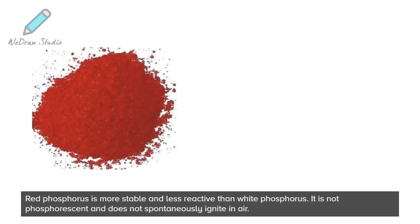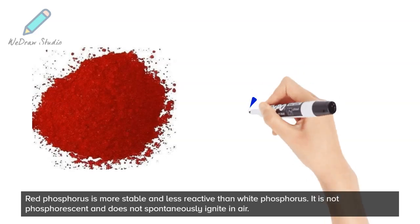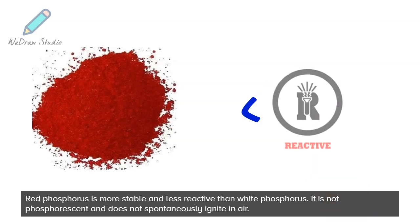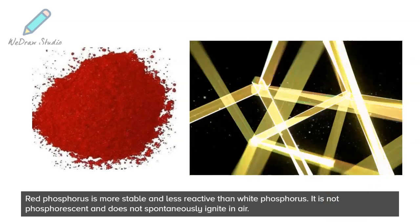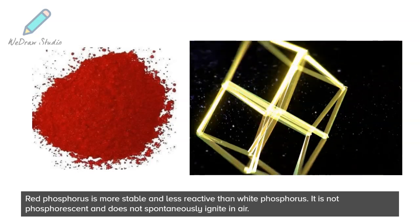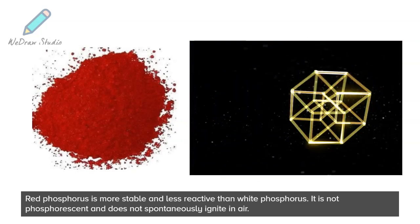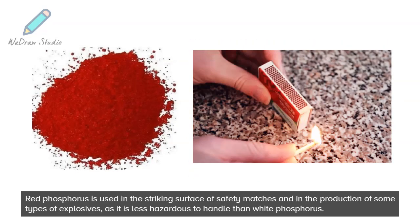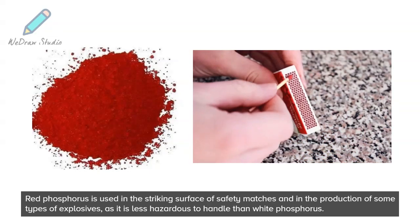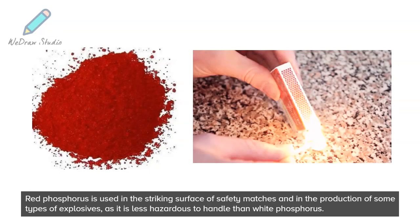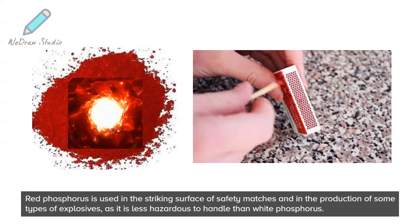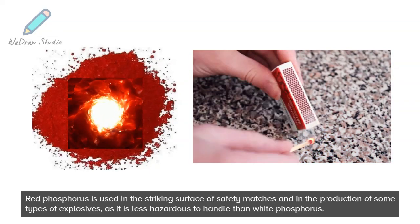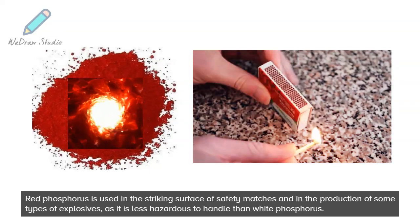Red phosphorus is more stable and less reactive than white phosphorus. It is not phosphorescent and does not spontaneously ignite in air. Red phosphorus is used in the striking surface of safety matches and in the production of some types of explosives, as it is less hazardous to handle than white phosphorus.